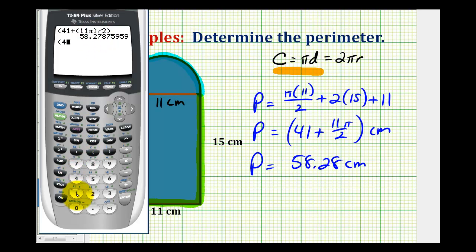So if we use 3.14 for pi, we'd have 11 times 3.14, or all divided by two.